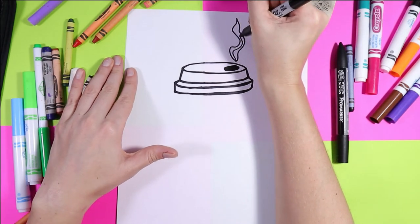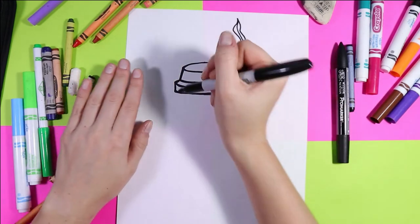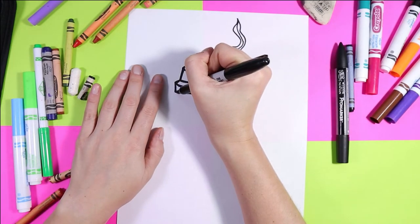you can draw a little wisp of vapor coming on up. And I like to draw a second line down in the center. And that way we'll add some color variation later. Next, we're going to draw.